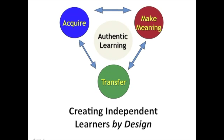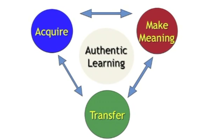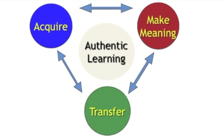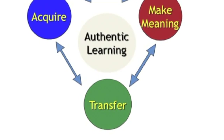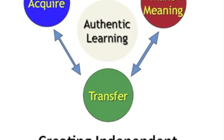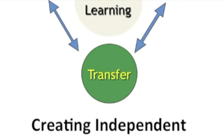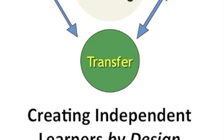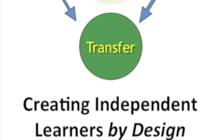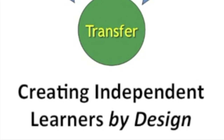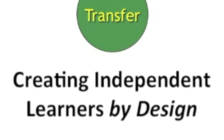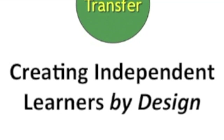Hi, my name is Rosie, and we're going to be looking at an overview of three interrelated elements of learning: acquisition, making meaning, and transfer, to create independent learners that have the sophistication and the skill set to tackle those unfamiliar, messy problems, challenges, and questions.